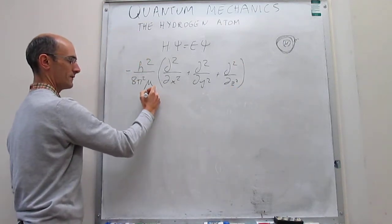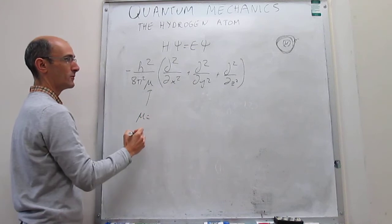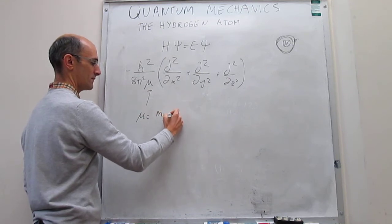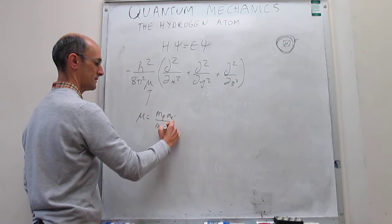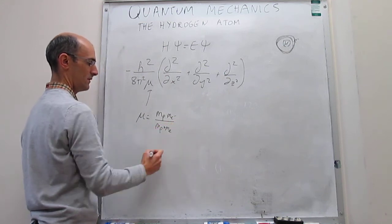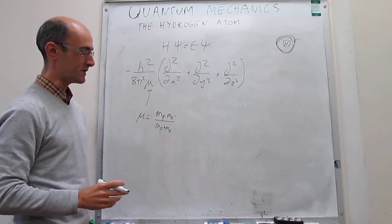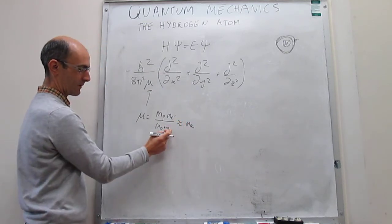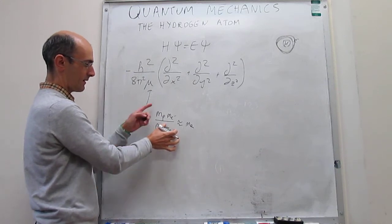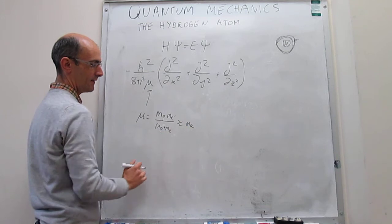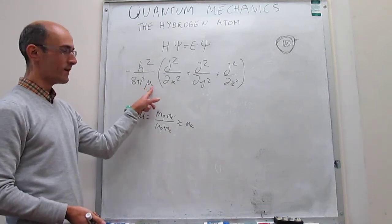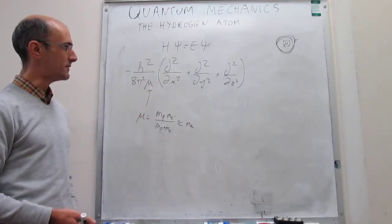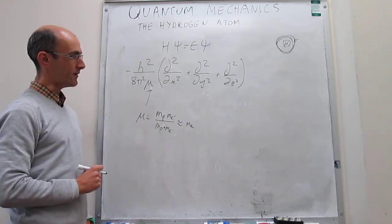Notice that here we have something called a reduced mass — the reduced mass of the proton-electron pair. That would be the mass of the proton times the mass of the electron over the sum of the masses. Because the mass of the proton is about 1,800 times greater than the mass of the electron, this is essentially the same as the mass of the electron. You might see this equation written with the mass of the electron, even though for accurate work people use the reduced mass of the entire system.